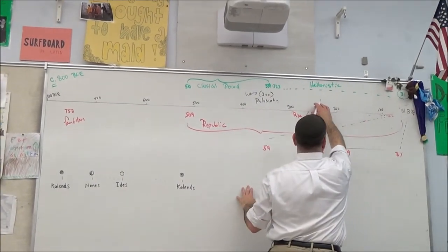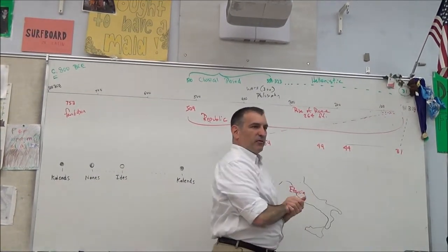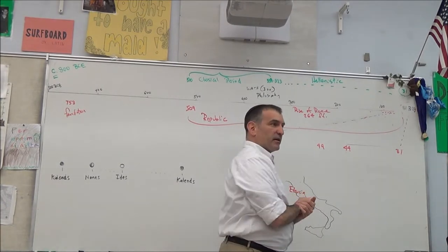Here, Rome is pretty much taking over the Mediterranean, just killing people, taking them as slaves, killing more people, taking more slaves.